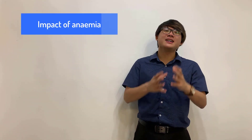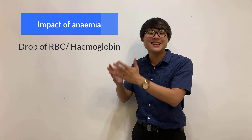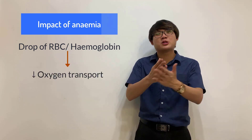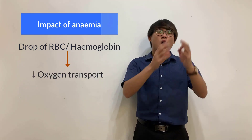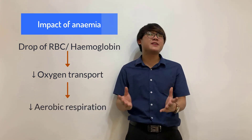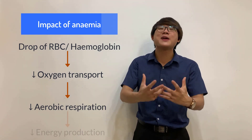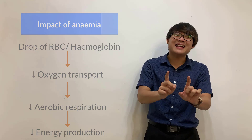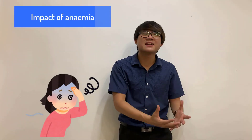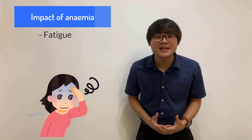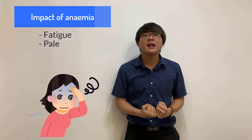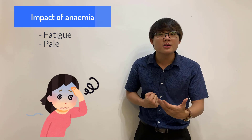Generally, anemia is characterized by a drop of hemoglobin in the blood. This will allow lesser oxygen to be transported to body cells. And remember, oxygen is important for cellular respiration, specifically aerobic respiration, to generate energy. So you can expect that a patient with anemia will suffer from problems like fatigue, which means they will get tired easily.